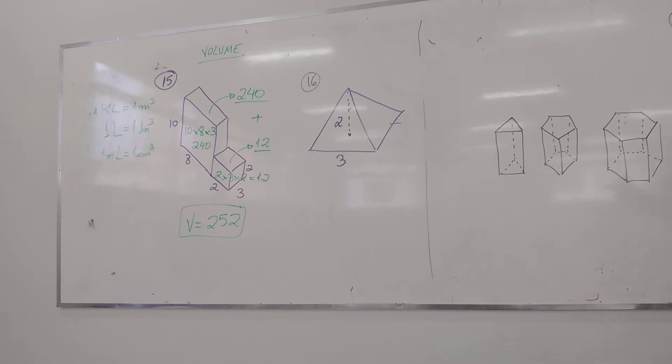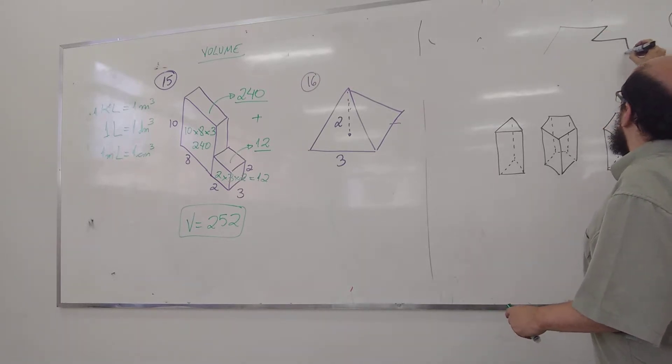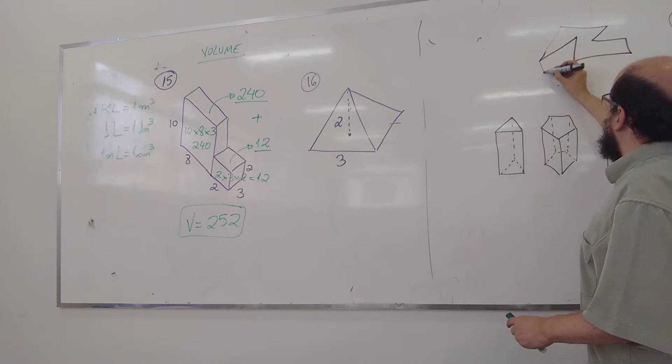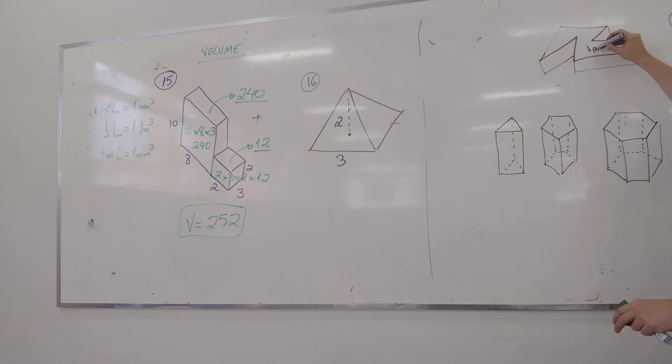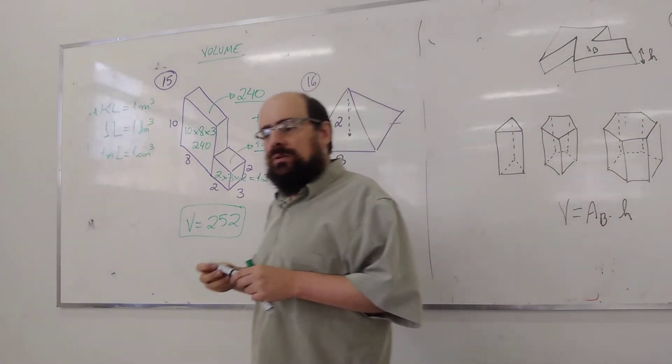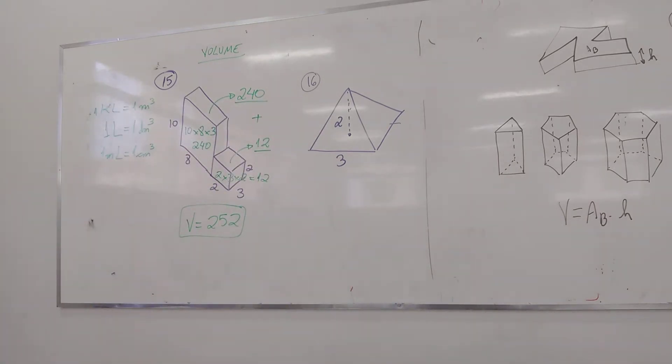Se eu pegar essa figura e eu fizer mais assim pra baixo, se eu quiser achar o sólido, o volume disso aqui, é só achar a área da base, Pablinho, e multiplicar pela altura. Então, o volume do prisma é só achar a área da base vezes a altura. Que jeito que eu achar a área da base dessa figura louca aí? Quadricula tudo e conta quantos quadradinhos tem aí. Ou pega um pedacinho de papel, vai colocando tudo, depois vai ver quando o papel gastou.